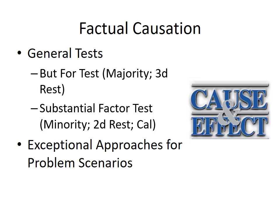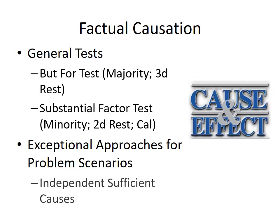The substantial factor test is a minority approach for negligence. It was adopted by the second restatement and is still retained by California. We've already taken a good look at the but-for test. It works pretty well in most cases, especially where there's a direct connection between the defendant's negligent act and the plaintiff's injury. It's perhaps less effective in cases involving omissions or an indirect connection. There's one other scenario we're going to look at: the independent sufficient cause scenario.